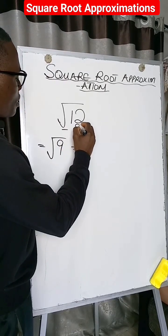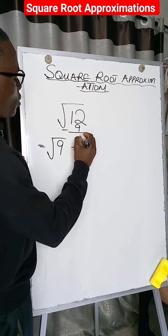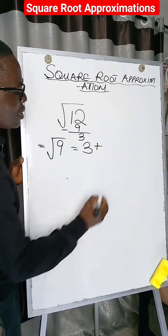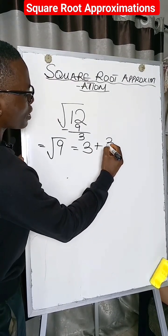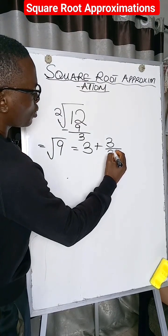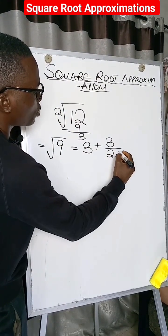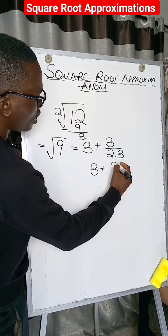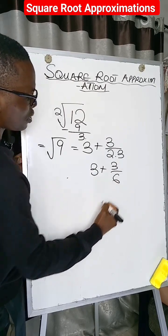When we subtract 9 from 12, we are going to have 3 as a remainder. So that 3, we will add it divided by, there is always a 2 here in the square root, 2 multiplied by the 3. And this will give us 3 plus 3 divided by 6.